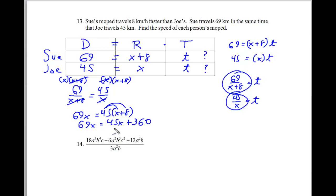And we're now going to solve for x. I'm going to subtract 45x from both sides. And I'm going to rewrite my problem over here. Because 69 minus 45x is going to be 24x. And that's equal to 360.